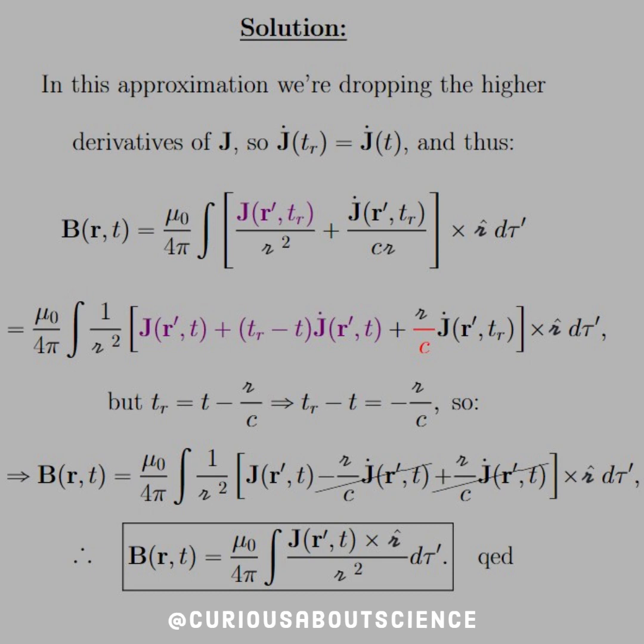But we know that t_r = t - R/c, so t_r - t = -R/c. So when we plug that in for the J̇ term at r' and t,